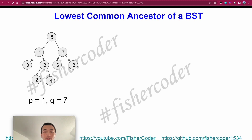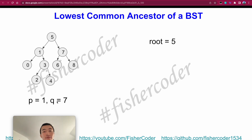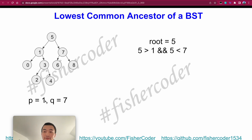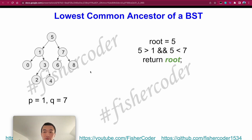With p as 1 and q as 7, we're trying to find the LCA. We use the feature of the binary search tree — everything is sorted. The given root is 5. We compare the values of the two nodes against the current root. 5 is greater than 1 but 5 is smaller than 7, so the current root is actually the LCA of these two nodes. We return root.